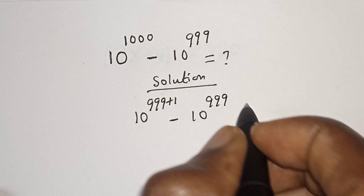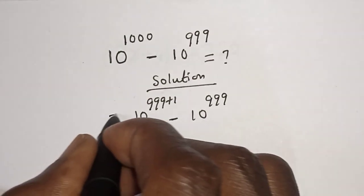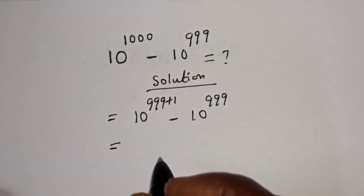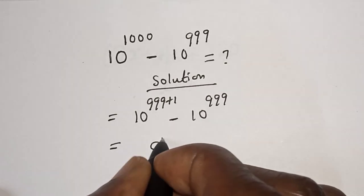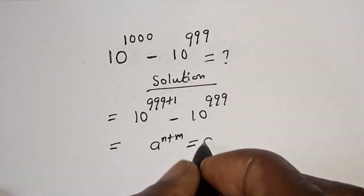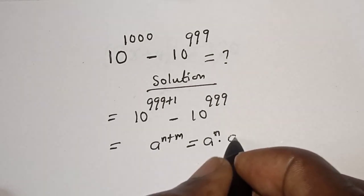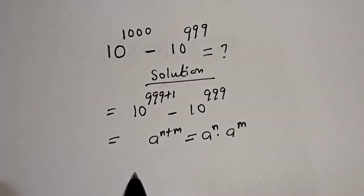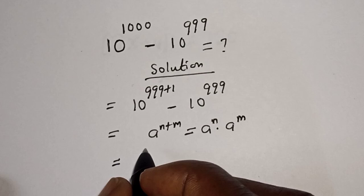Take note of this rule: a raised to power n plus m equals a raised to power n multiplied by a raised to power m. This equals 10 raised to power 999 multiplied by 10 raised to power 1, minus 10 raised to power 999.